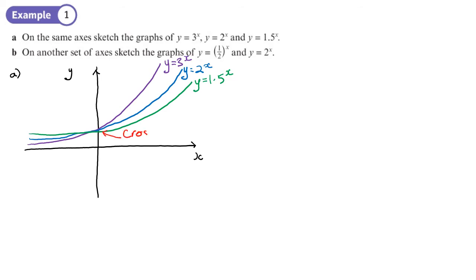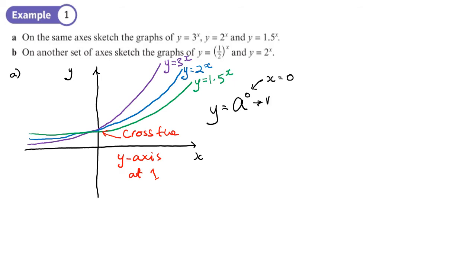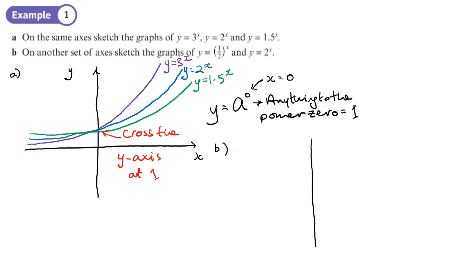What all these graphs have in common is that they all cross the y-axis at 1. Why is that? Because when x equals 0, you're doing something to the power 0, and anything to the power 0 equals 1. That's why all of these graphs cross at 1.